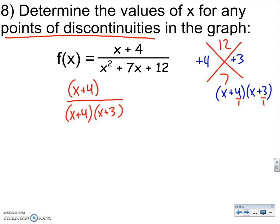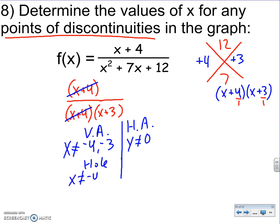There's fully factored. Step 2 is restrictions. Well, x cannot be negative 4 or negative 3. That's our VA. I just do the whole thing. HA, there is no HA. It's 0. Then we cancel out. Well, this x plus 4, x plus 4 cancels out. So, when you cancel out, that's where you have the hole. So, the restriction from x plus 4 was negative 4. To answer the question, they say, where's the point of discontinuity? The hole is at x equals negative 4.